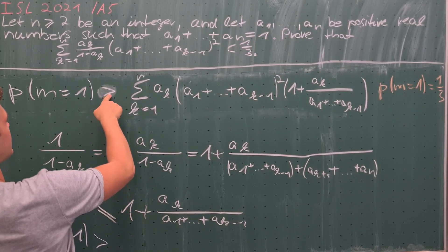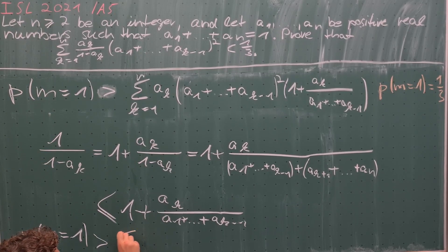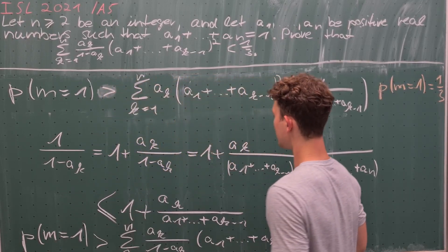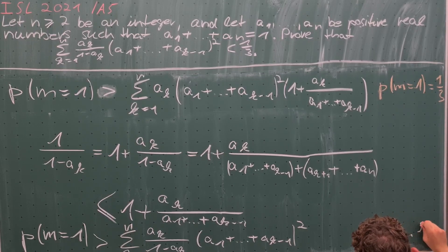So combining this inequality with what we have now established gives us the following result, which is exactly what we wanted to show. And since P of m equals one is one third, we are done.